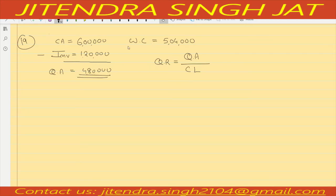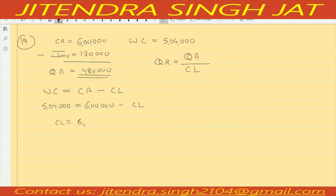Now current assets and working capital are given, so we can calculate current liability. Working capital equals current assets minus current liability: 5 lakh 4,000 equals 6 lakh minus current liability. So current liability will be 6 lakh minus 5 lakh 4,000, which equals 96,000.